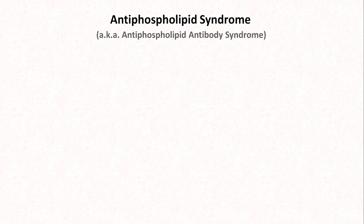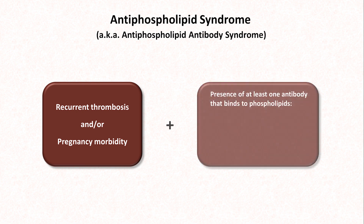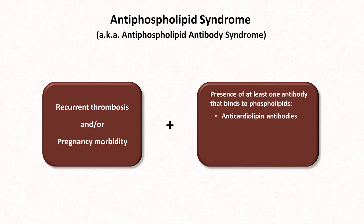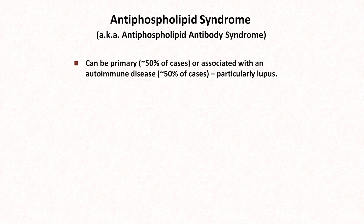The acquired hypercoagulable states are more diverse, and there are three notable specific diseases with an unusually strong predilection for causing thrombosis: antiphospholipid syndrome, heparin-induced thrombocytopenia, and paroxysmal nocturnal hemoglobinuria. The antiphospholipid syndrome, also called antiphospholipid antibody syndrome, is composed of the combination of either recurrent thrombosis and/or pregnancy morbidity, such as fetal loss and preeclampsia, plus the presence of at least one antibody that binds to phospholipids, of which there are three primary types: anti-cardiolipin antibodies, anti-beta-2 glycoprotein-1 antibodies, and one called lupus anticoagulant. About half of the cases of antiphospholipid syndrome are said to be primary, while the other half are associated with an autoimmune disease, most commonly lupus.